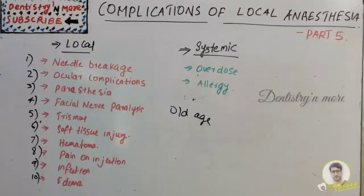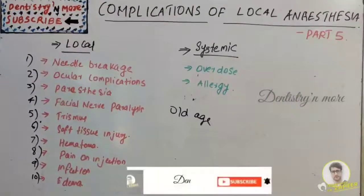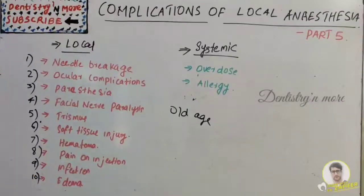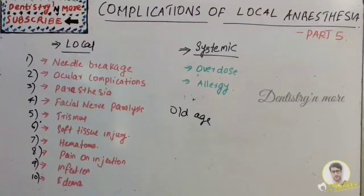Predisposing factors for overdose include patient factors and drug factors. Patient factors include age — in older age, functions of absorption, metabolism, and excretion are diminished, increasing the drug's half-life in circulation; weight — greater body weight requires a larger dose; medications such as phenytoin and quinidine which affect local anesthetics; gender — renal function during pregnancy may be impaired, leading to increased local anesthesia blood levels; presence of disease such as hepatic, renal, or heart failure; and genetics — deficiency of enzymes such as pseudocholinesterase. Fearful patients may require a larger dose and should be relaxed first.